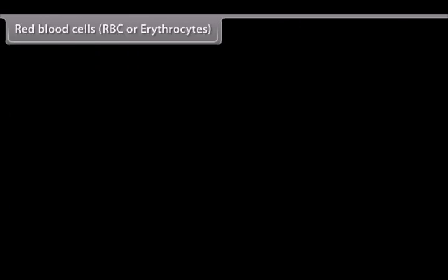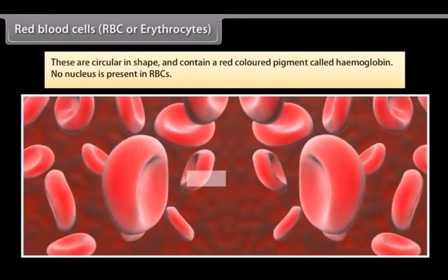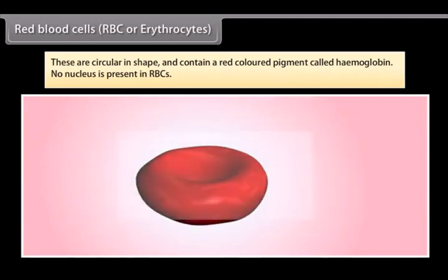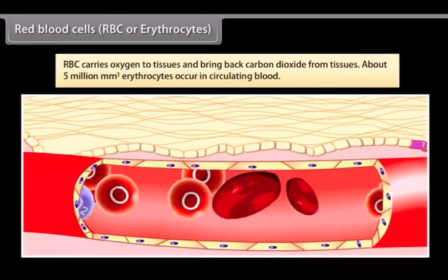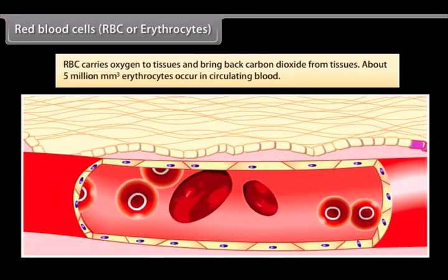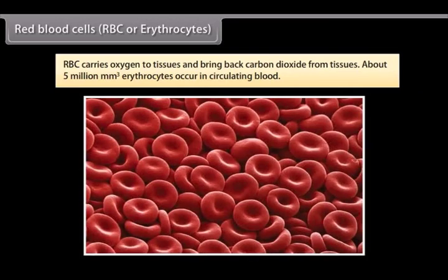Red blood cells, RBC or erythrocytes. These are circular in shape and contain a red colored pigment called hemoglobin. No nucleus is present in RBCs. RBC carries oxygen to tissues and bring back carbon dioxide from tissues. About 5 million per cubic millimeter erythrocytes occur in circulating blood.